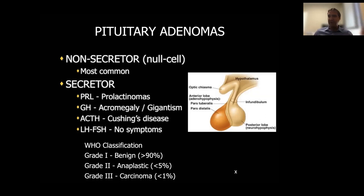The other half are secretory tumors, with three major categories: prolactinomas produce prolactin; growth hormone adenomas produce acromegaly or gigantism; and ACTH tumors cause Cushing's disease. LH/FSH tumors or gonadotroph adenomas cause no symptoms, so we include them in the non-secretory category. Most adenomas are benign — probably 95 to 99%. There is a group that are more atypical and aggressive, and very rarely there is something called pituitary carcinomas, which can even have metastasis, but this is extremely rare.